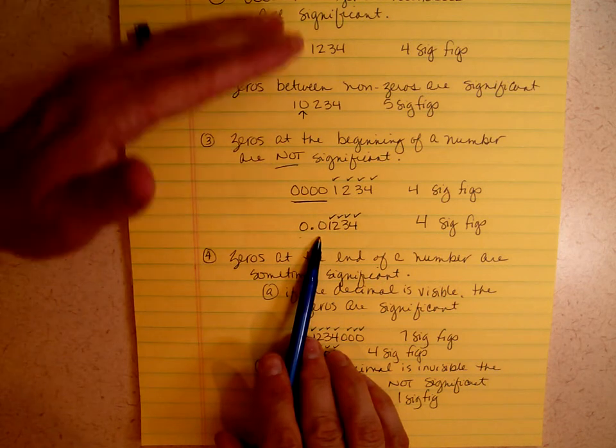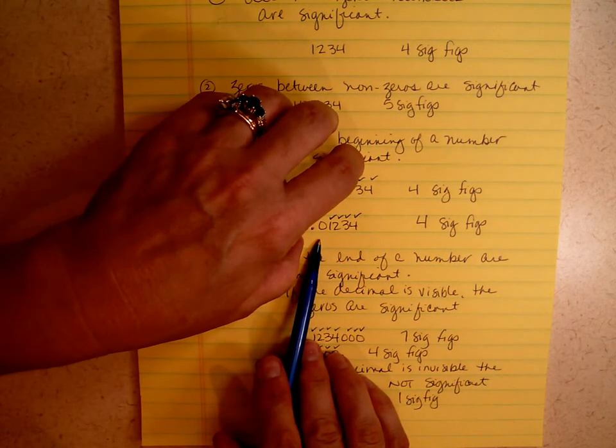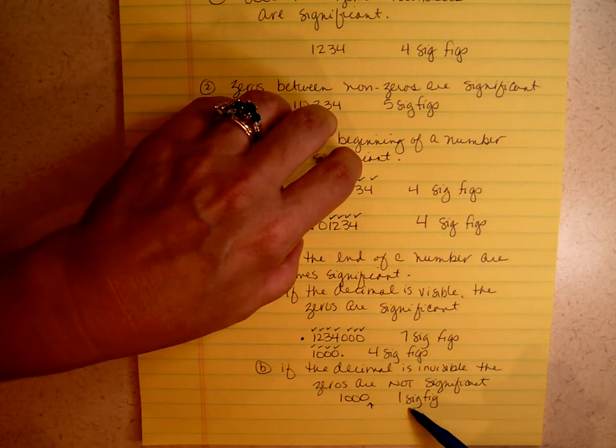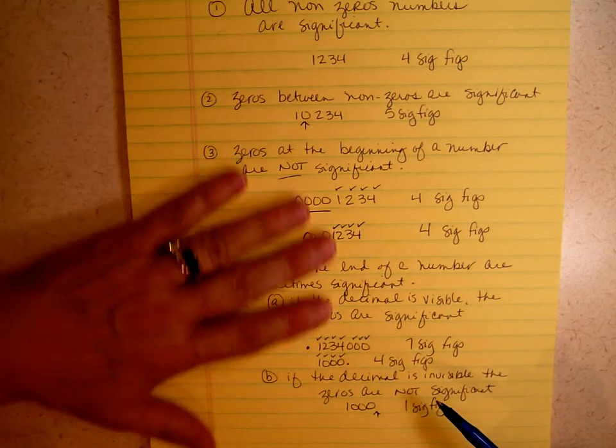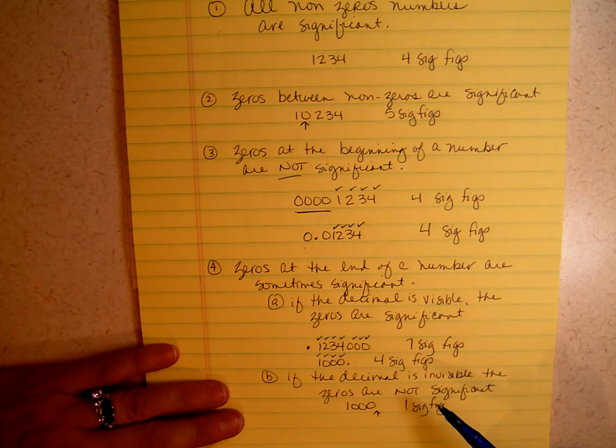No. Because this rule says zeros at the beginning of a number are never significant. And if you do these in order, the ones at the beginning of a number are wiped out before you ever get to the decimal. So as you work through significant figure problems, make sure that you use these rules in order.